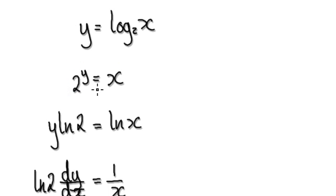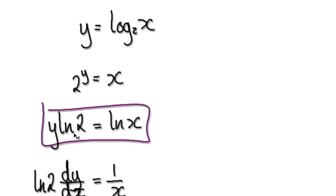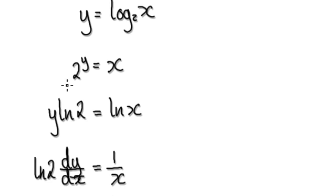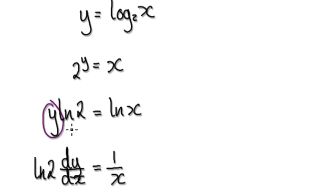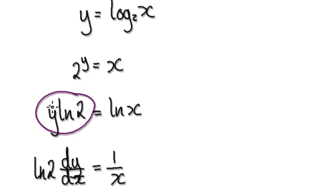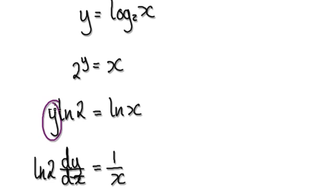So when you're here, take the natural log equally on both sides. That will then give you this. So now use implicit differentiation. Don't forget, this is just a constant — natural log of 2 is just a number, it's just a constant. So if you differentiate this with respect to y, that will then give you this. Because y is a function of x, you've got to stick this dy/dx in here. Differentiate this, and that will then give you this.